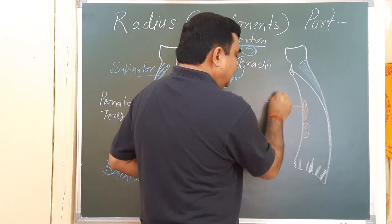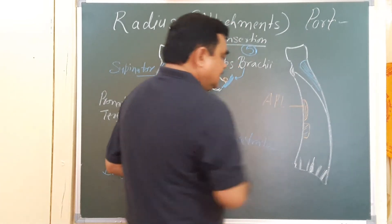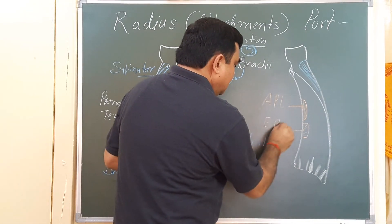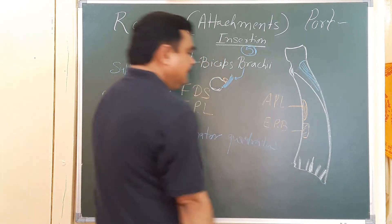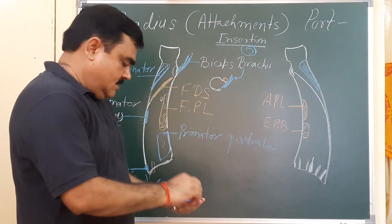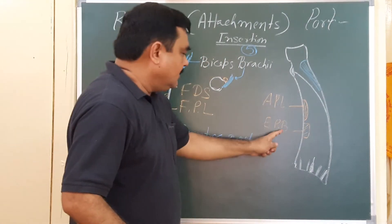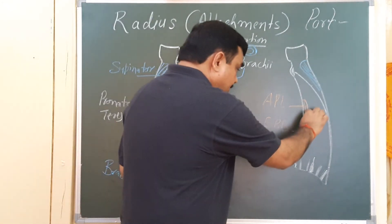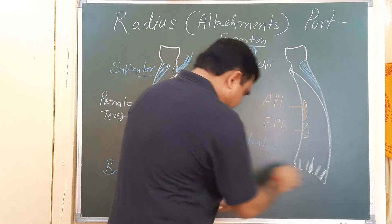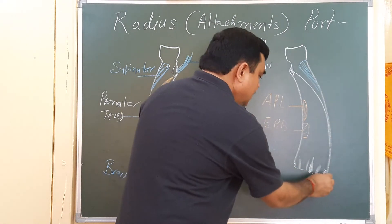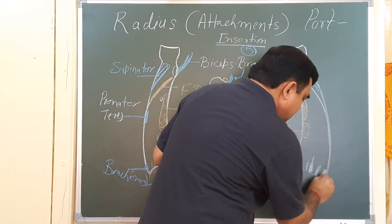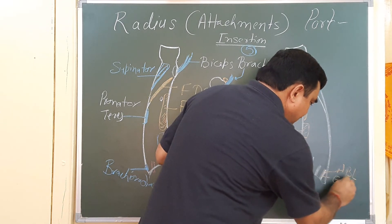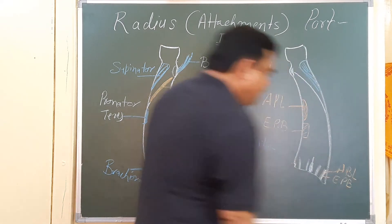This is abductor pollicis longus, and this is extensor pollicis brevis. The tendons of both these muscles pass through the first extensor compartment. Here the abductor pollicis longus and extensor pollicis brevis tendons pass.